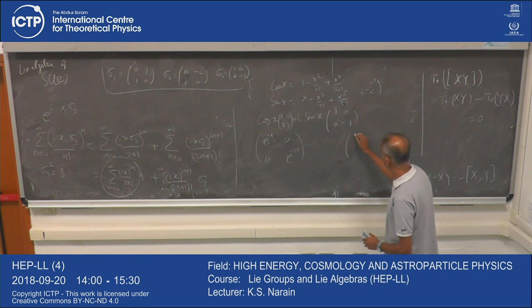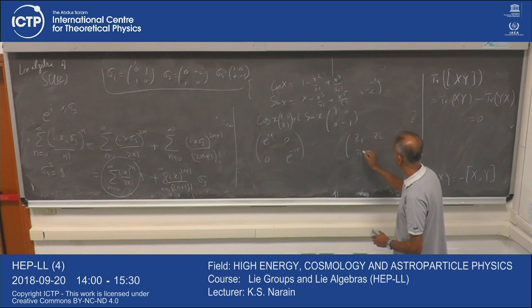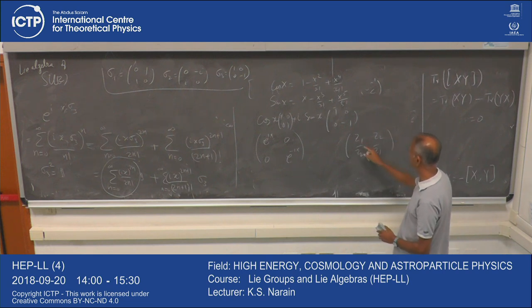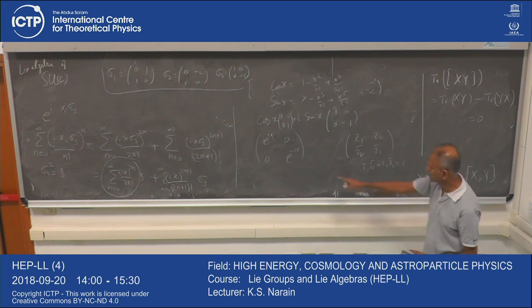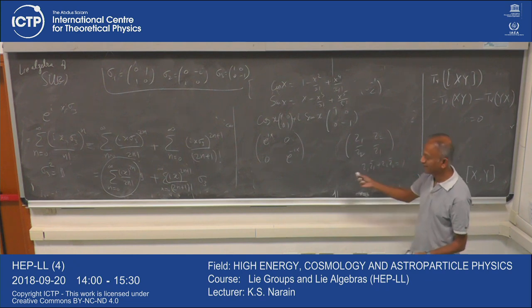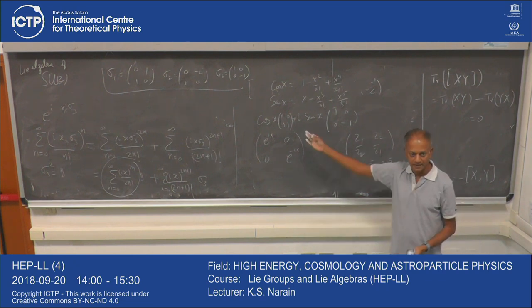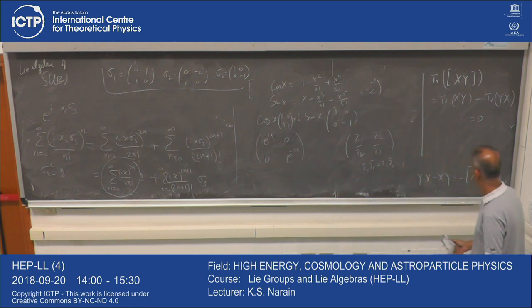This is a particular case of the general SU(2) parameterization [[z₁, z₂],[−z̄₂, z̄₁]] subject to |z₁|² + |z₂|² = 1, where z₂ = 0 and z₁ is a pure phase. That's what it is.